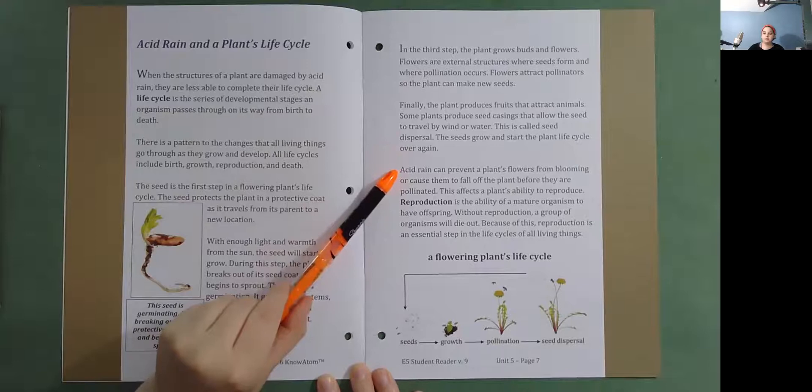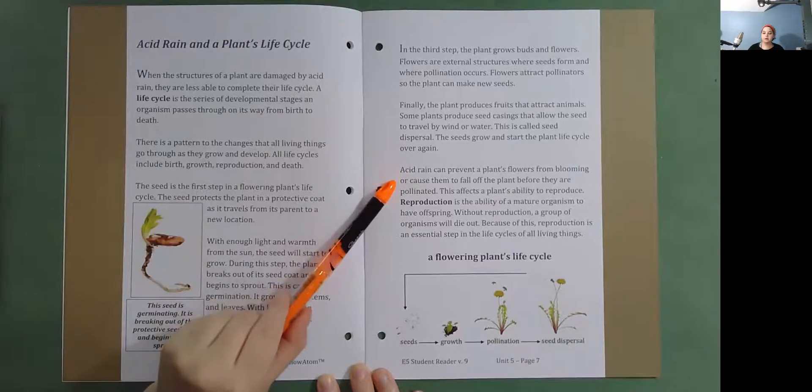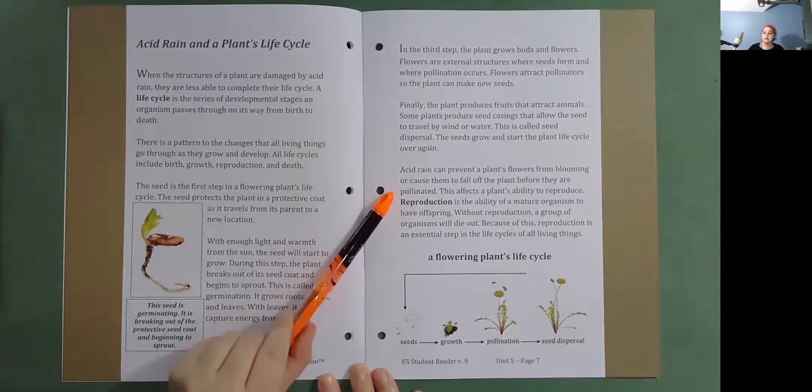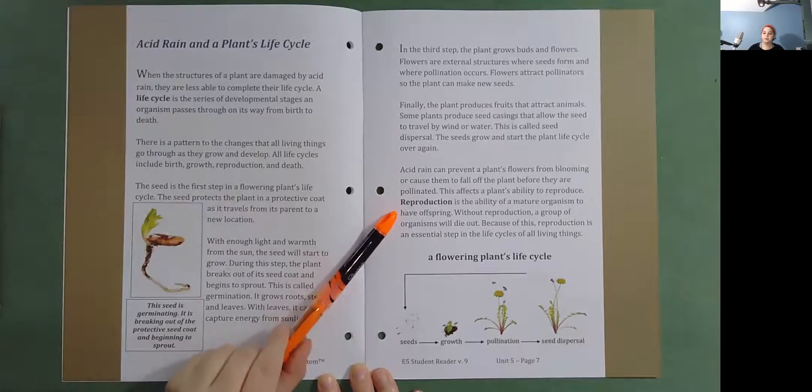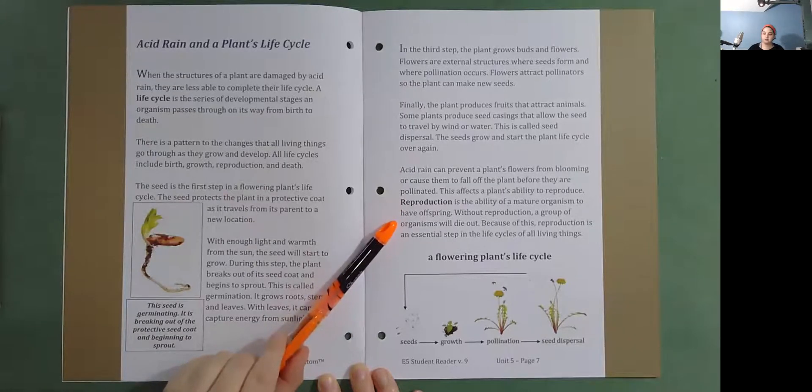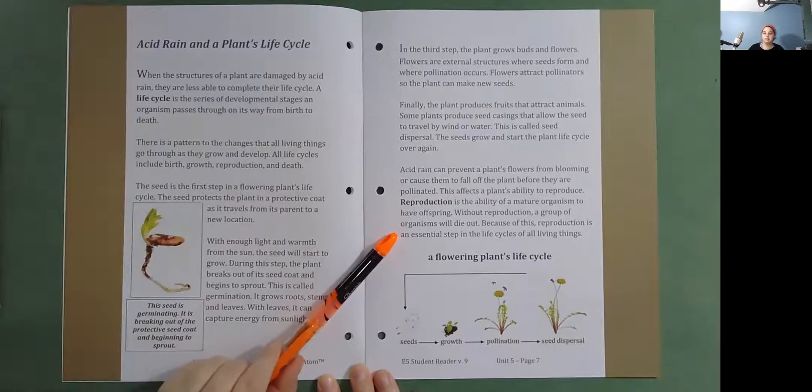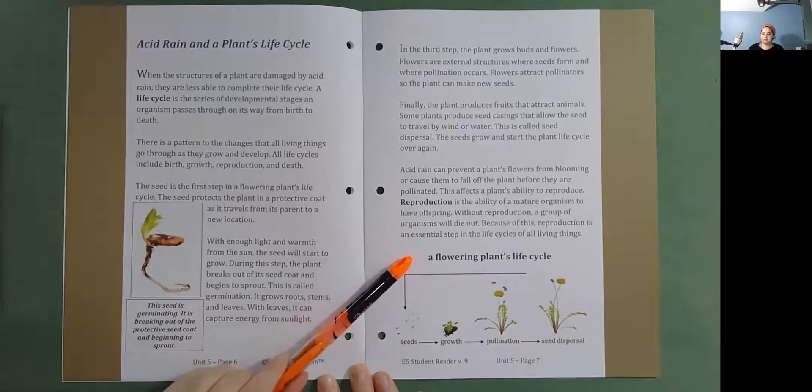Acid rain can prevent a plant's flowers from blooming or cause them to fall off the plant before they are pollinated. This affects a plant's ability to reproduce. Reproduction is the ability of a mature organism to have offspring. Without reproduction, a group of organisms will die out. Because of this, reproduction is an essential step in the life cycle of all living things.